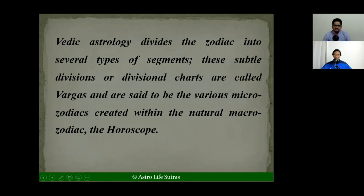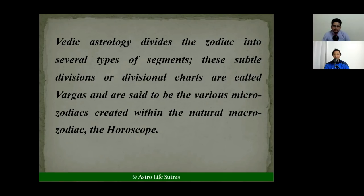As we all know, Vedic astrology divides the zodiac into several types of segments. A 30-degree segment is called a sign or bhava. A 3-degree 20-minute division is called Navamsha, a 3-degree 45-minute division is called Saptamsha, and so on. These subtle divisions or divisional charts are called Vargas in Sanskrit, and are said to be various micro-zodiac mini-charts created within the natural macro zodiac, which is the main chart or horoscope of the native.